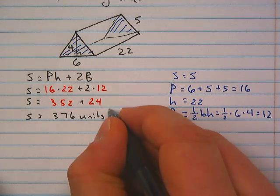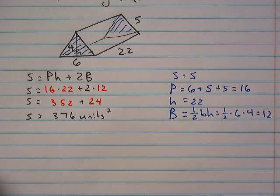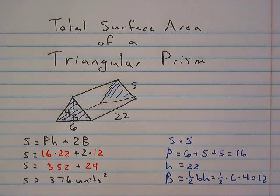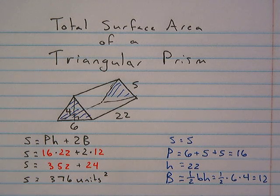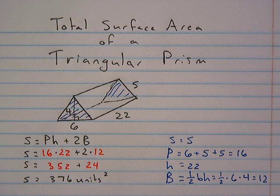This will be units squared because of the surface area. So that's the process to find the total surface area of a triangular prism.